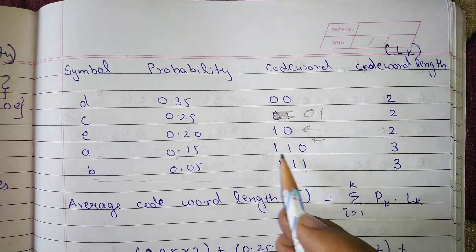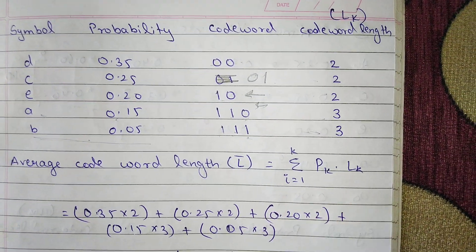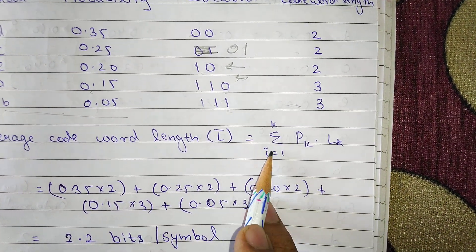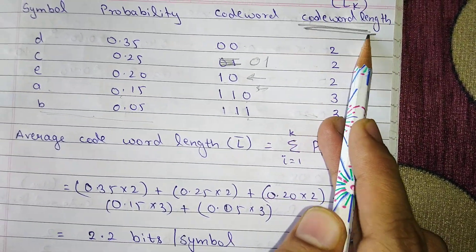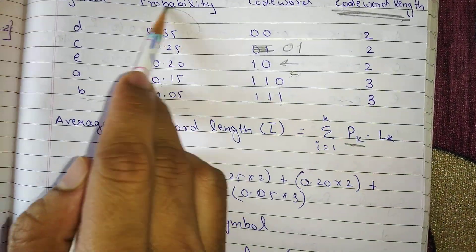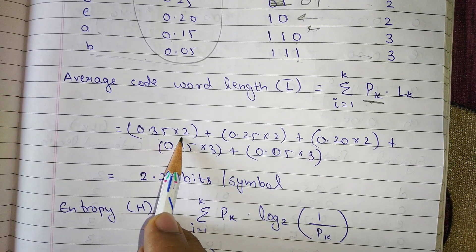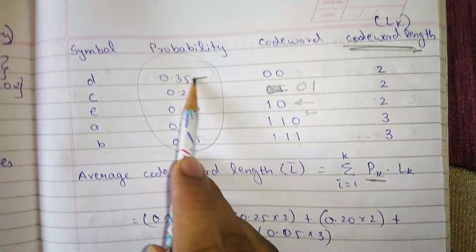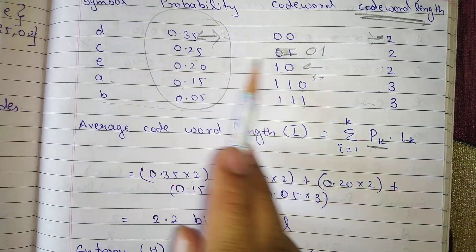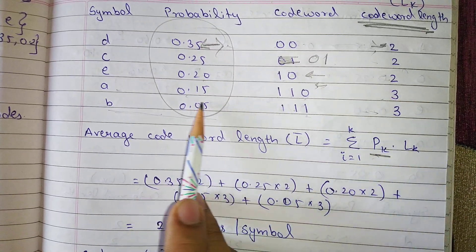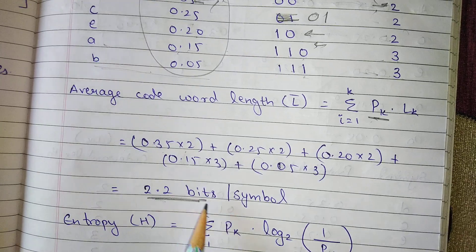Now let us find the average codeword length. The formula is: L̄ = summation of p(k) × l(k), where l(k) is the codeword length and p(k) is the probability. So: 0.35×2 + 0.25×2 + 0.20×2 + 0.15×3 + 0.05×3, which gives an average codeword length of 2.2 bits per symbol.